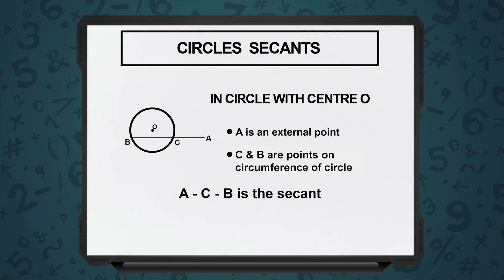Next, let us understand secant. Secant is also an external line which cuts across a circle, but a secant cuts across a circle in two points. Let us say I have this circle with center O and the same external point A, and I draw a line segment that goes through the circle.